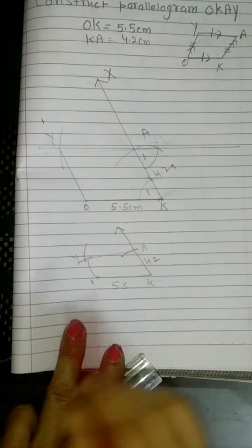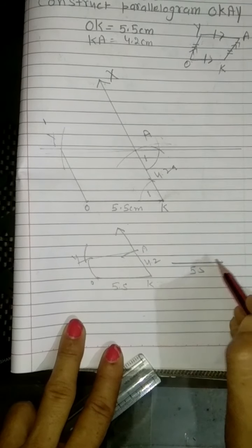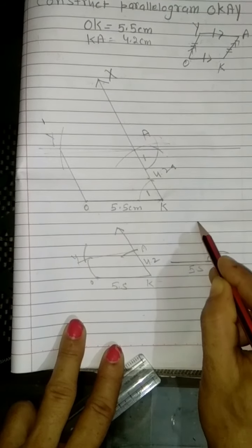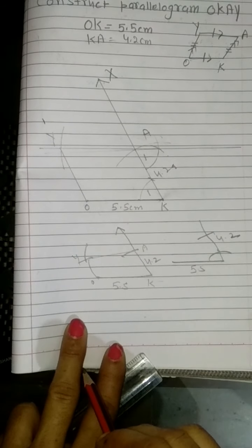Simply this way. Or draw this 5.5 cm, then draw here 60 degree angle, take 4.2 cm. Clear?